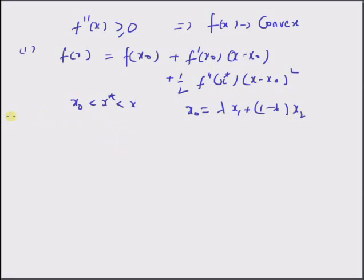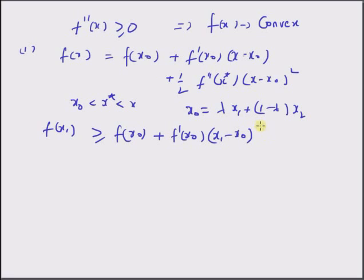At x equal to x 1, we have f of x 1 greater than f of x naught plus f prime of x naught multiplied by x 1 minus x naught. This is because f of x 1 is greater than the sum of the first two terms, since the third term in the Taylor series approximation is always positive — the second derivative is assumed non-negative and the squared difference is always positive.